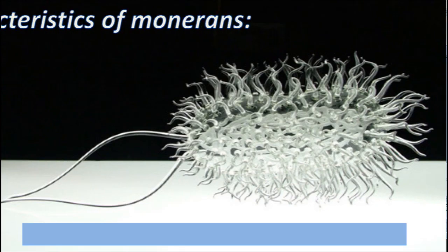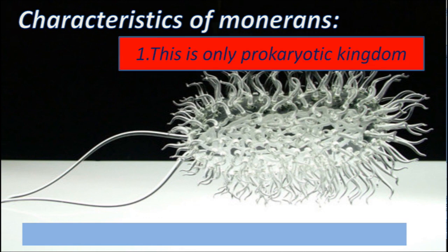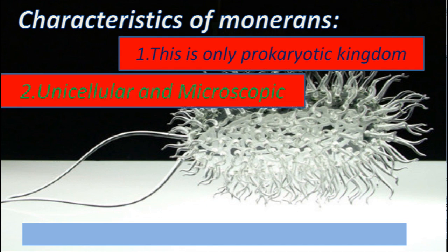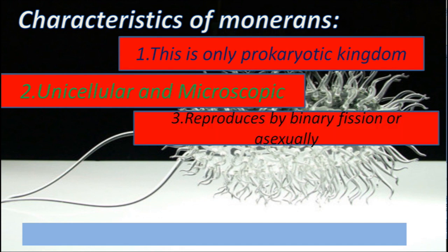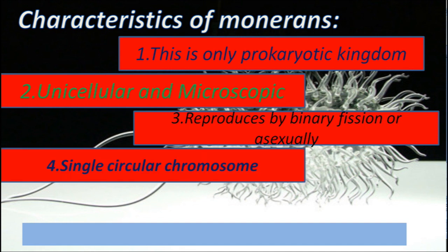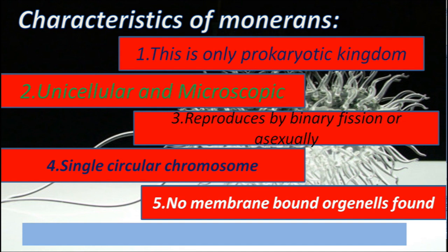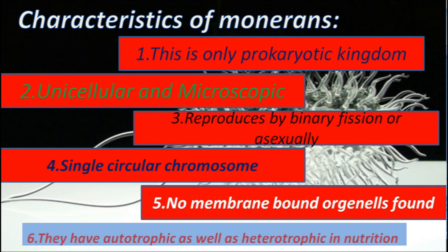Characteristics of Monerans: This is the only prokaryotic kingdom, having a prokaryotic cell. Monerans are unicellular and microscopic. They reproduce by binary fission, or asexually, and have a single circular chromosome. No membrane-bound organelles are found in Monerans.